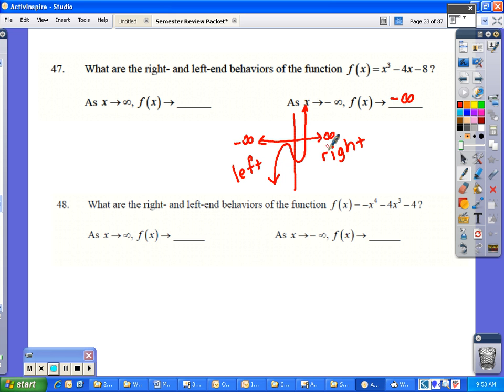For the right end behavior, the right end is as x goes to positive infinity. The graph goes to positive infinity, and the graph goes up to also positive infinity.